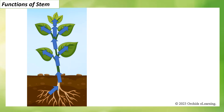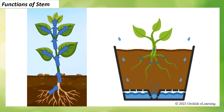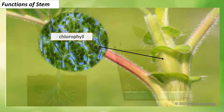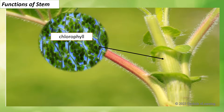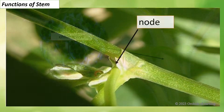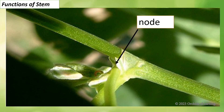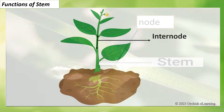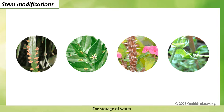The stem carries food manufactured by the leaves to other parts of the plant. A green stem has chlorophyll and can carry out photosynthesis. It has nodes from which leaves or buds that can grow into branches or flowers arise. The space between two nodes is called an internode.